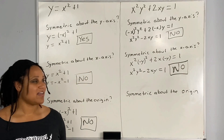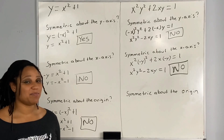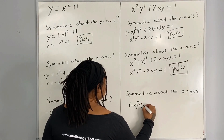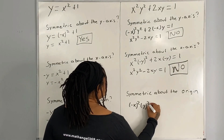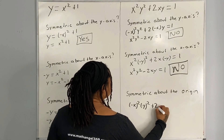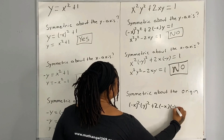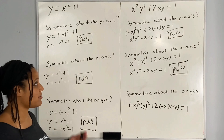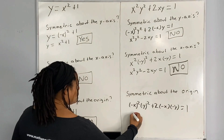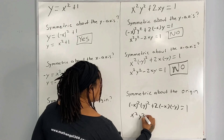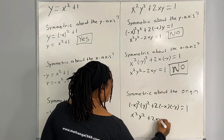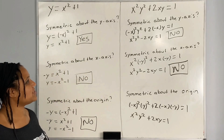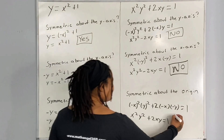Now let's look to see if the graph of the equation is symmetric about the origin. We are going to replace x with negative x and y with negative y, and see if we get the same equation as our original. We have x squared y squared plus 2xy is equal to 1. Here we do get our original equation, therefore it is symmetric about the origin.